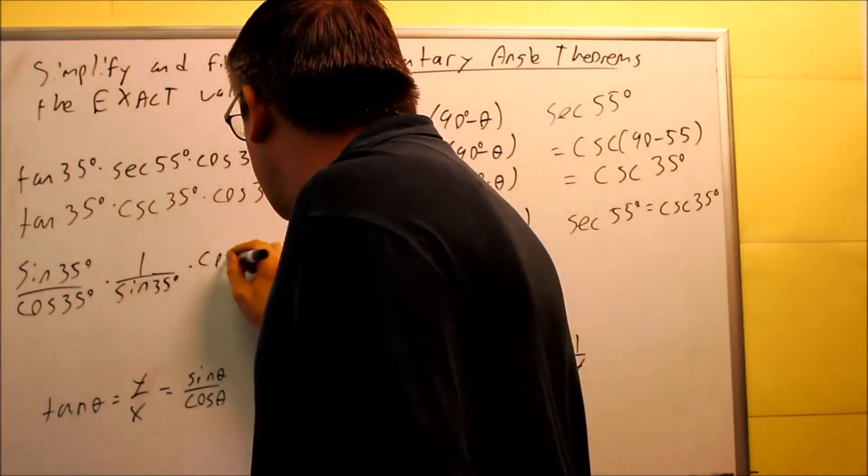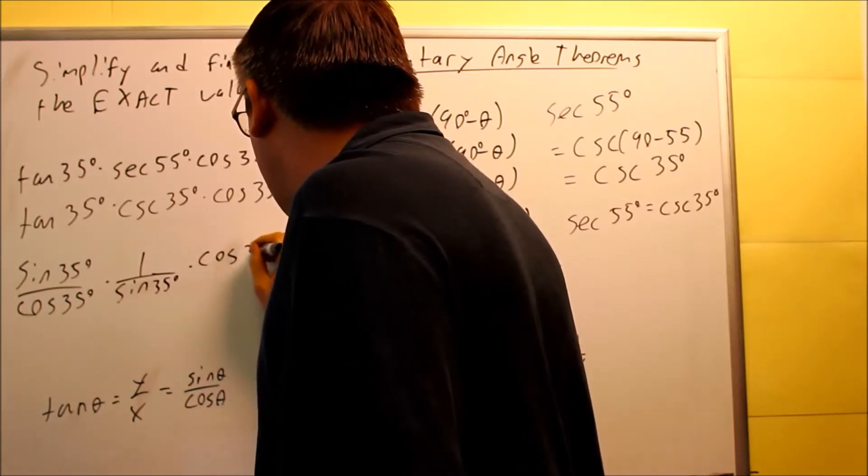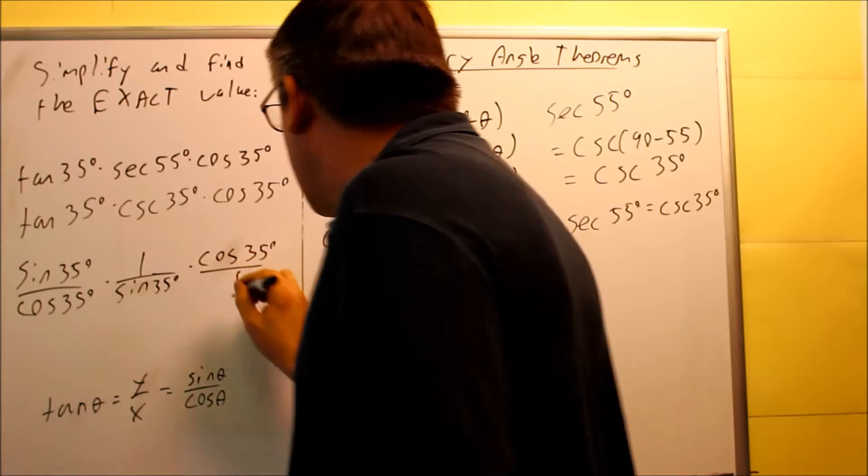Next, you're going to do cosine 35, we'll just leave that one as it is. So, cosine 35 degrees, that would be over 1.